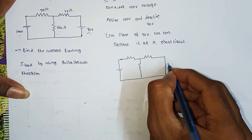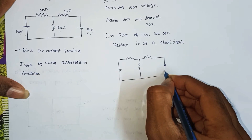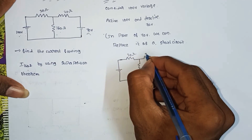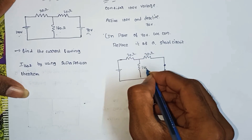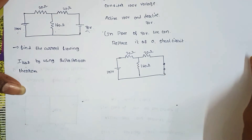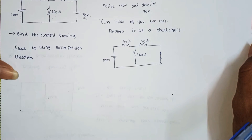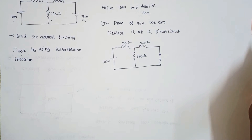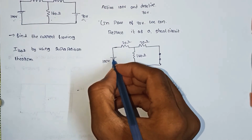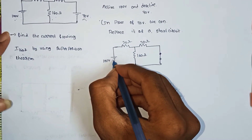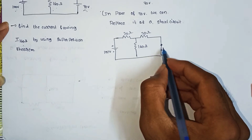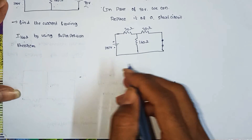We can redraw the circuit. This is short circuit, 20 ohms, 20 ohms, 160 ohms, and this is 100 volts — active, with minus and plus polarity. The 70V source is replaced by a short circuit.